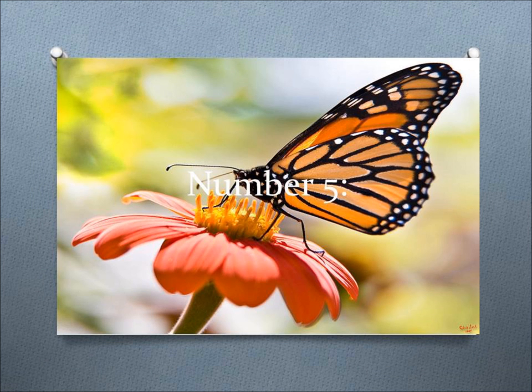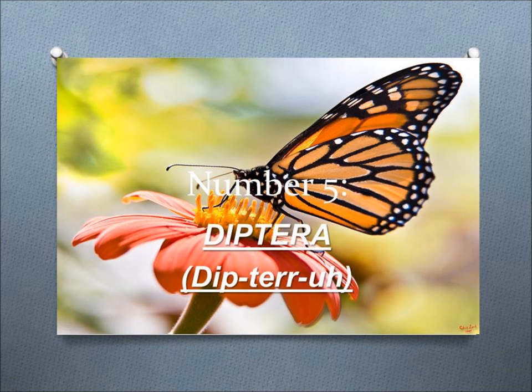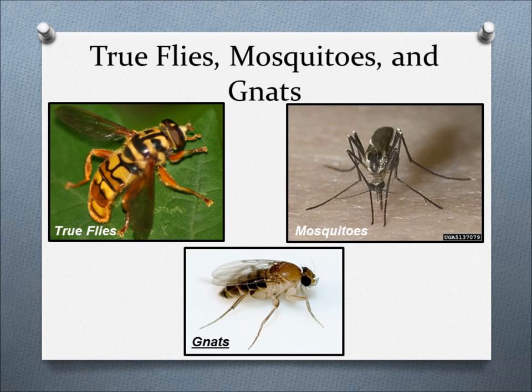Number 5, Diptera. This order includes true flies, mosquitoes, and gnats, that vary in size from minute to small, have soft bodies, and are equipped with sucking mouthparts and only one pair of functional wings.